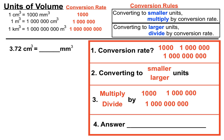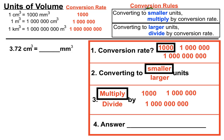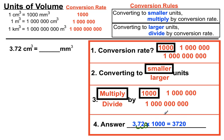Here we have 3.72 cm³ and we want to convert that to mm³. The conversion rate between cm³ and mm³ is 1000. We're converting to smaller units — mm³ are smaller than cm³ — so we multiply by 1000. That moves the decimal point three places to the right. We fill in a zero as needed, giving us a final answer of 3720 mm³.